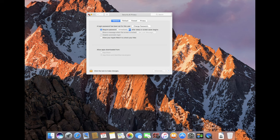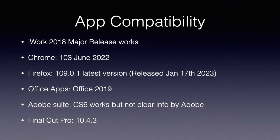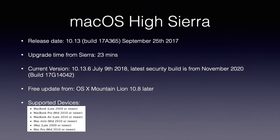So those are the features introduced in macOS Sierra — very minimal, with the key one being Siri. It was a very minor OS update but with loads of bug fixes. For app compatibility in macOS Sierra: iWorks 2018 major release works; Chrome 103, released June 2022, is the last version that works; Firefox latest version works; Office 2016 is the last supported version; Creative Suite 6 works; and Final Cut Pro 10.4.3 is the last version that works.